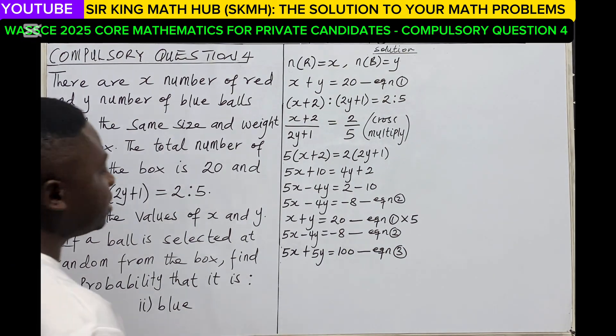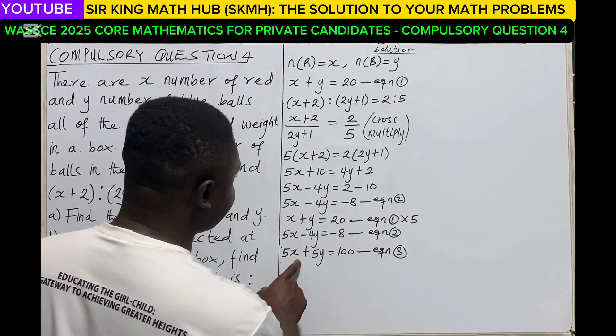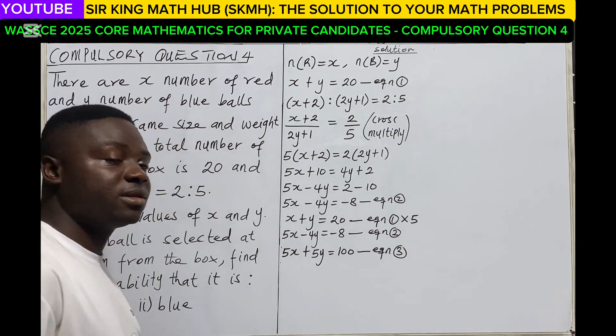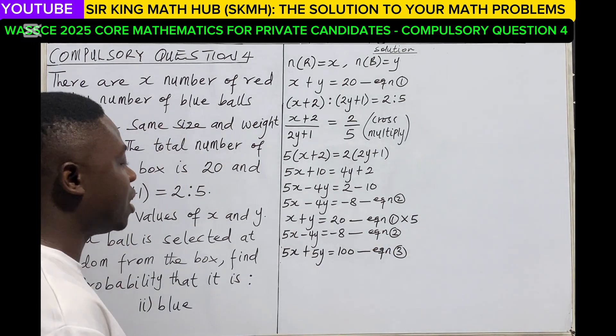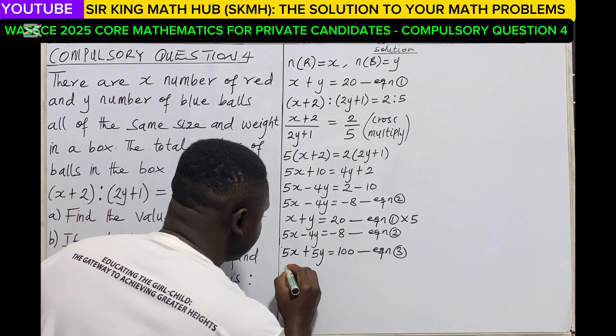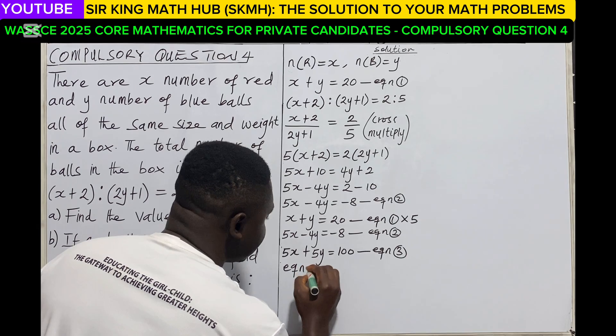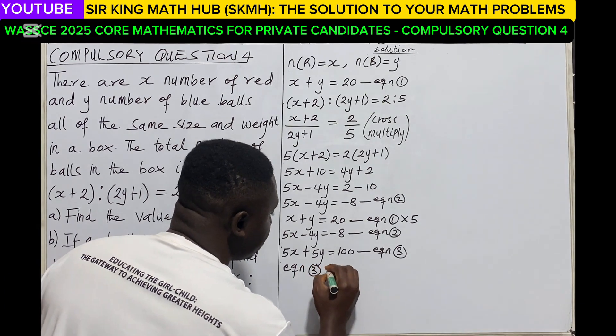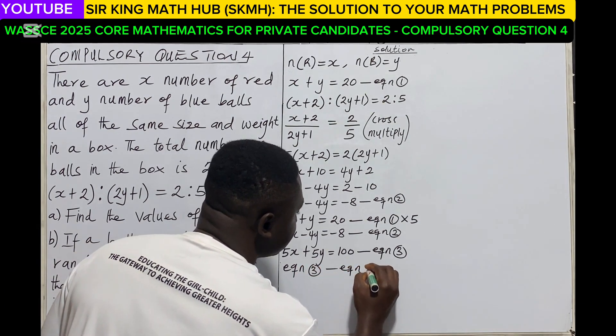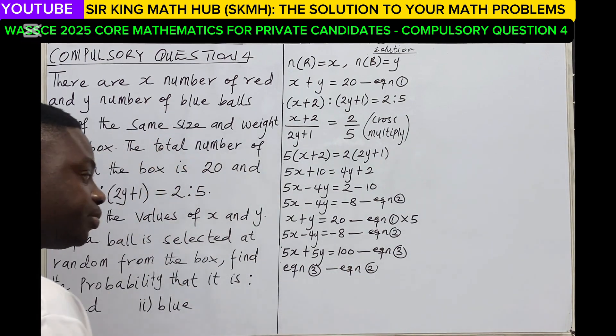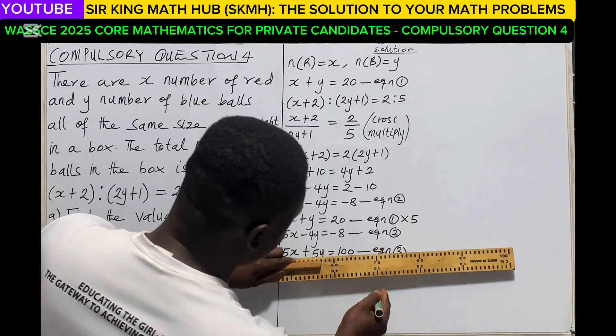So now using our third equation and the second equation, we can eliminate x. So how do we eliminate x? So consider equation 3 minus equation 2.